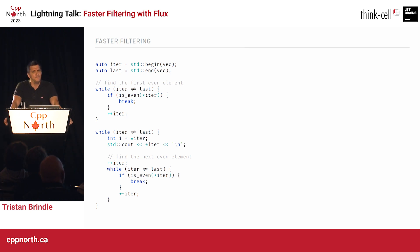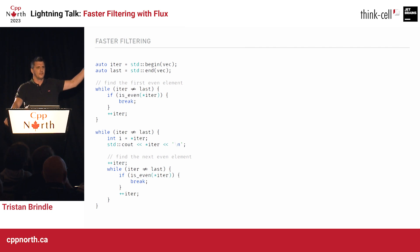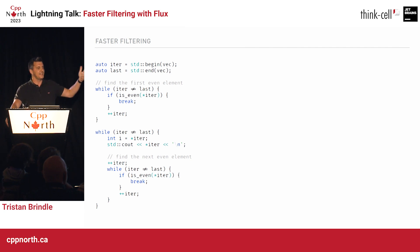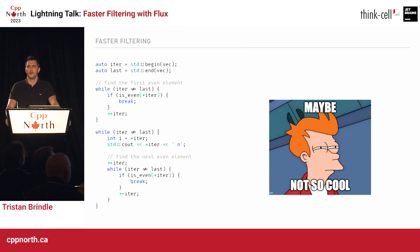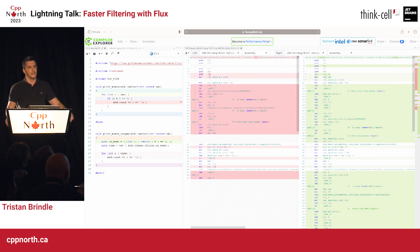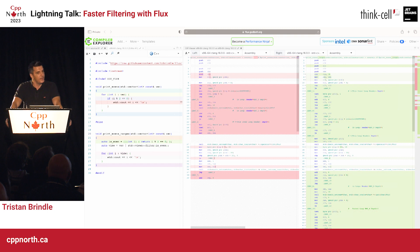Now we look at this and go, hmm, I'm not so sure about this. This doesn't look quite as simple as what we started out with. Because we've got one loop to find the first even element, another loop that does the actual printing, and within that a nested third loop that at every stage finds the next even element. So maybe this is not quite so cool as we thought. If we go to Compiler Explorer and put in these two implementations, we can see that in this particular case ranges isn't doing so great — we're actually generating quite a lot more assembly in the ranges case.